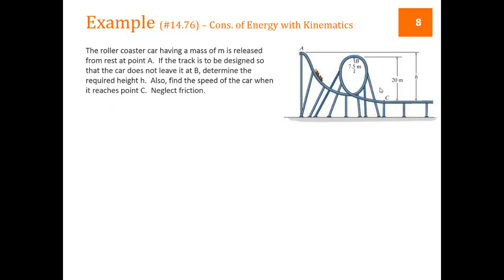We have three points that we're interested in here. We can write out our equation TA plus VA is going to equal TB plus VB is going to equal TC plus VC. There's no springs involved here, so all of the elastic potential energies are zero. All we have are gravitational potential energies.